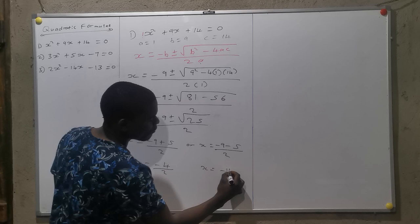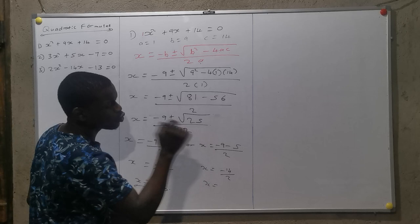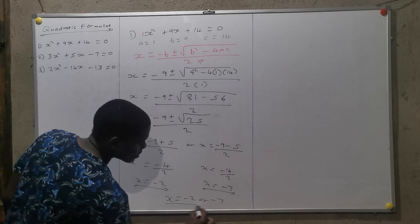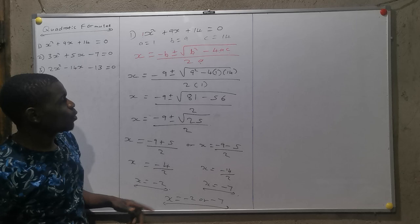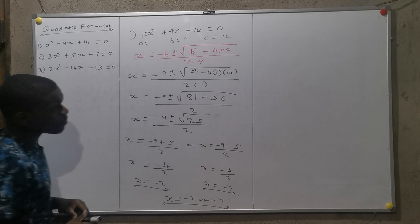Right, now I simplify. X equals minus 9 plus 5, which is minus 4, over 2. Two into this gives minus 2. Then X equals minus 9 minus 5, which is minus 14, divided by 2. Two into minus 14 gives minus 7. So X equals minus 2 or minus 7. That's the answer.